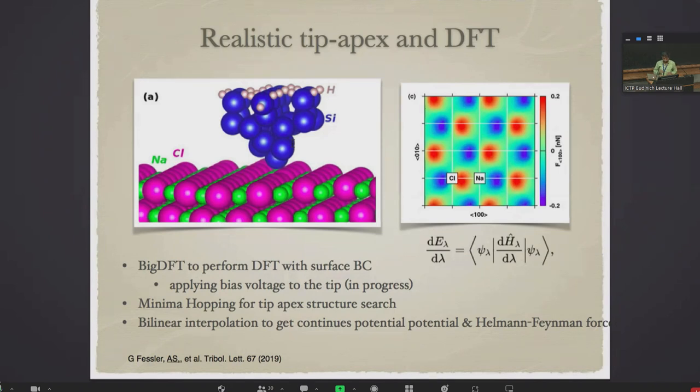So I put this nanotip over the NaCl surface and moved it along the crystallographic directions and sampled the potential energy over something like 400 data points and interpolated the potential energy to get the DFT interpolated potential energy, which describes the tip-sample interaction.